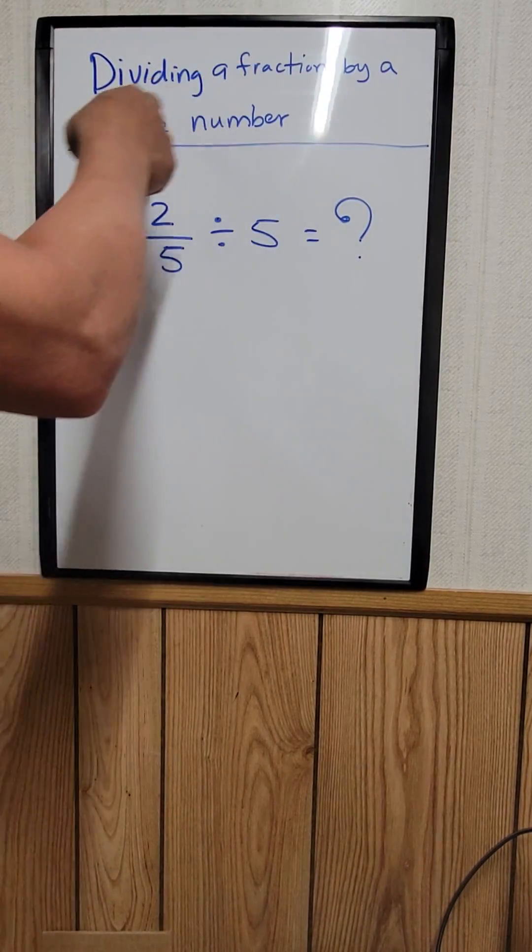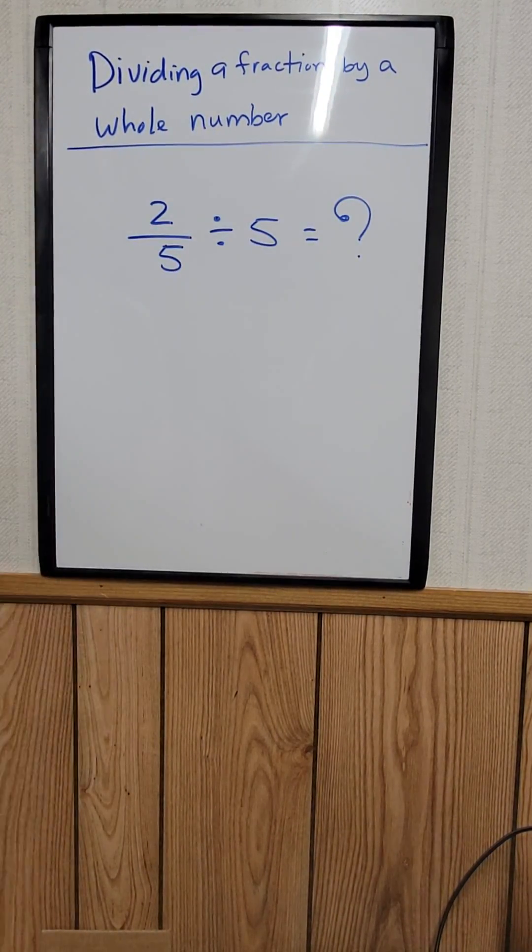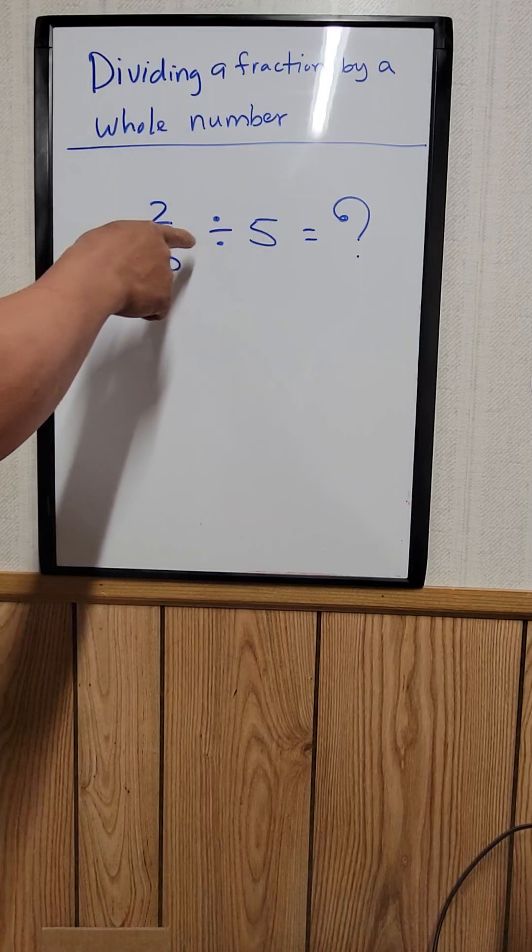How to divide a fraction by a whole number. So for example, right here, 2 over 5 divided by 5.